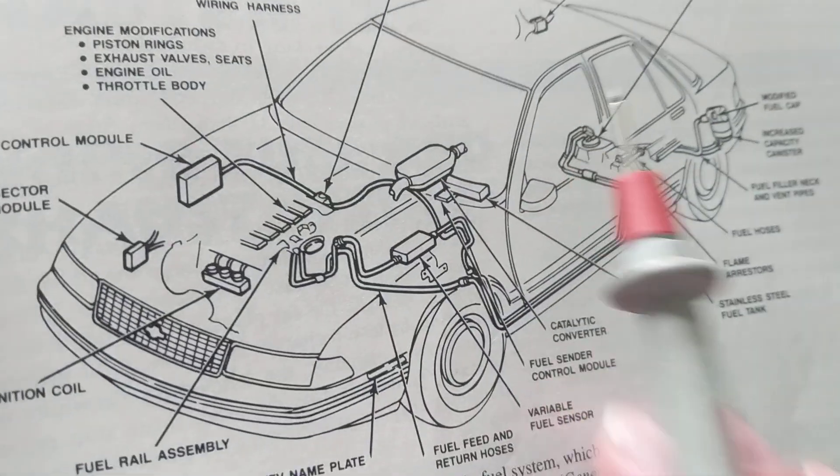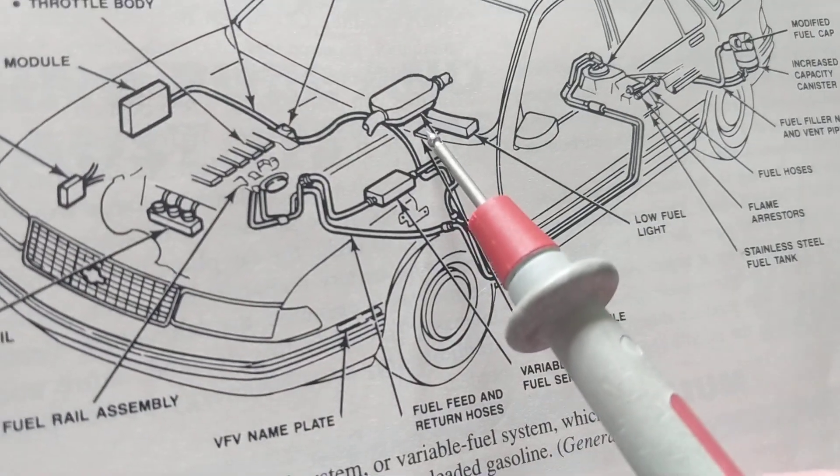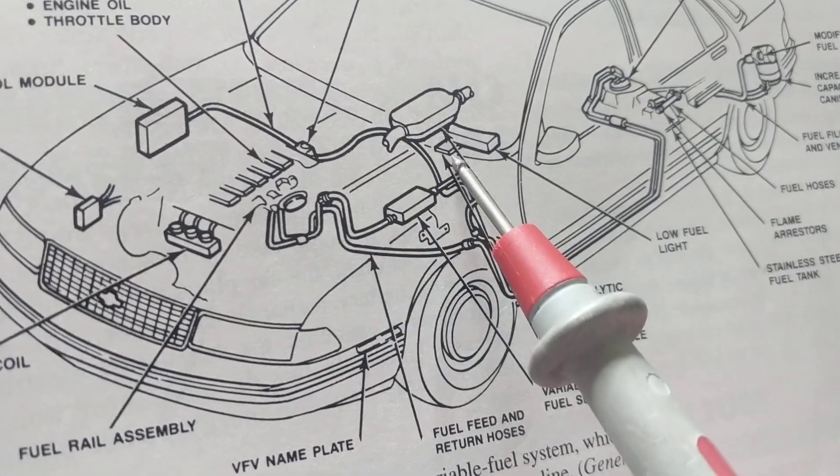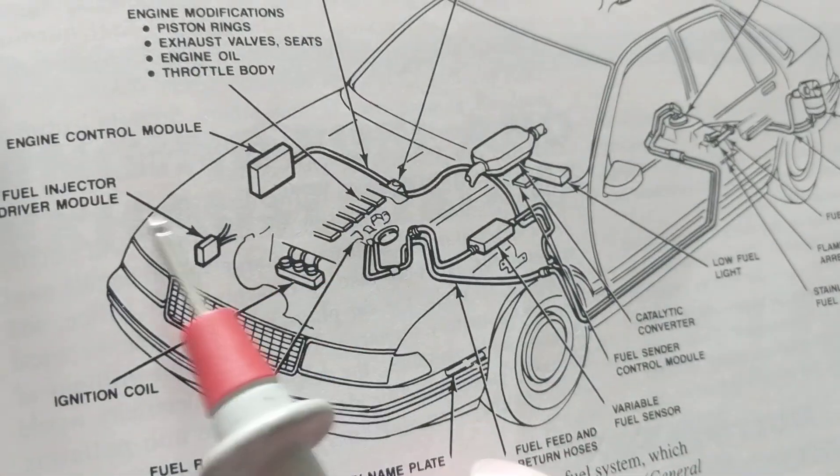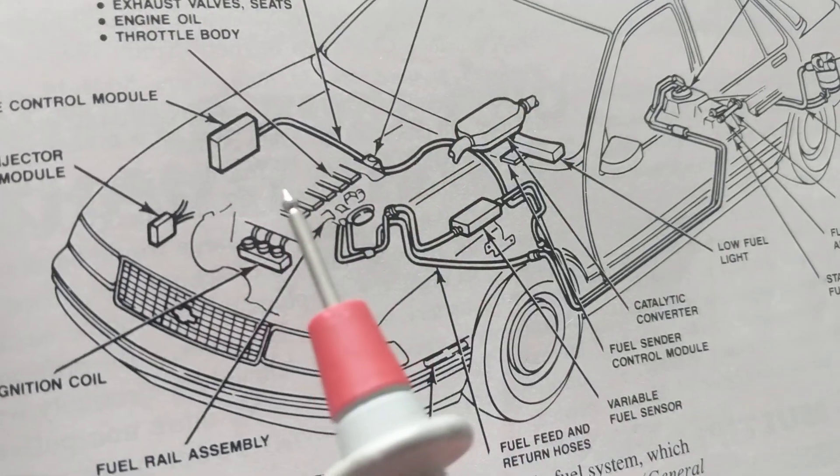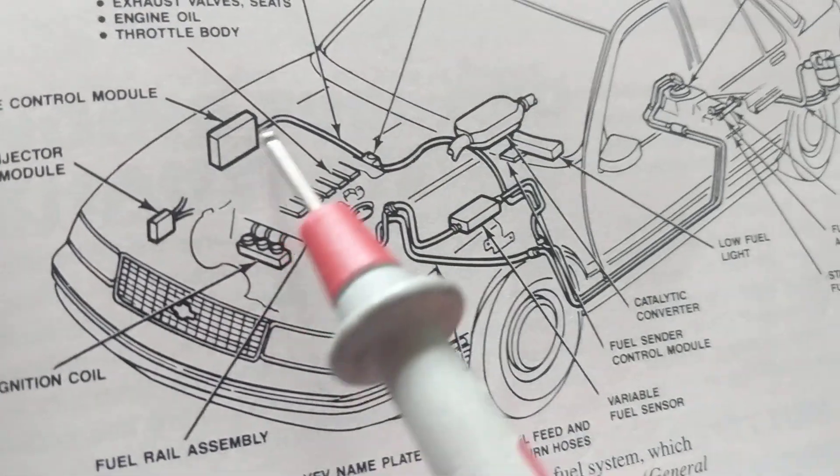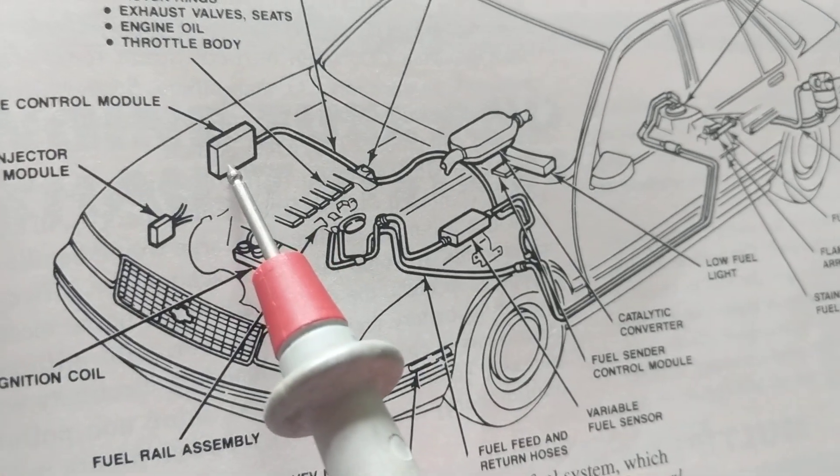So you have all these modules. You have one module here by the firewall, by the dashboard. You have another one here, you have another one here. Now, if you're going to put this PCM, this is the biggest one usually and it has the most components. Where is there a safe place to put this that vibration or heat will not affect it?